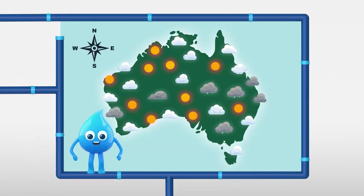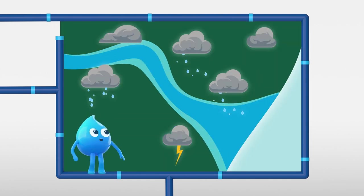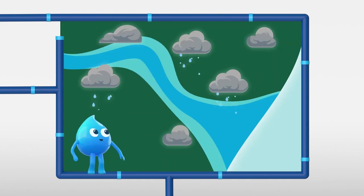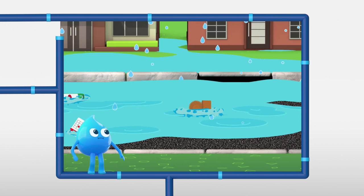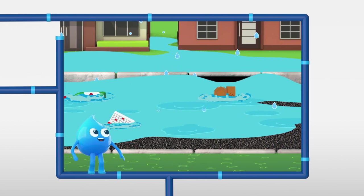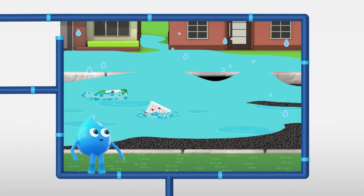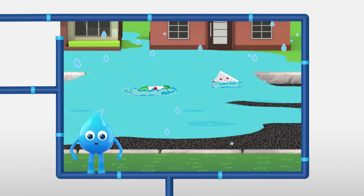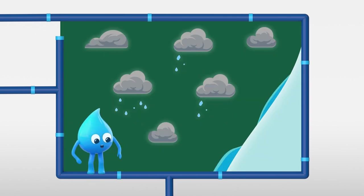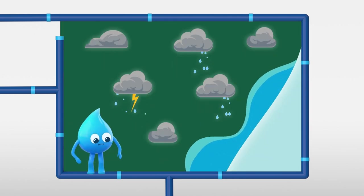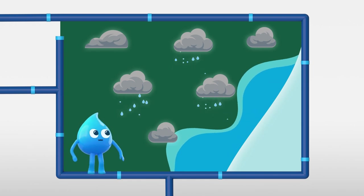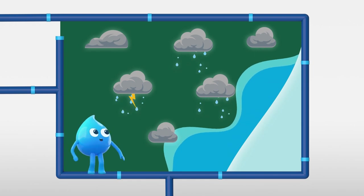There are three main ways floods can happen in Australia. Heavy rains cause rivers and creeks to burst their banks. Or heavy rain falls on hard surfaces where the ground can't absorb the water and the stormwater drains can't cope. Or along the coast, ocean tides rise above normal sea levels during storm events.